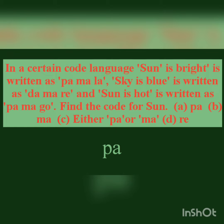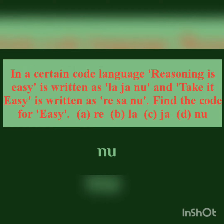In a certain code language, 'sun' appears in both 'sun is bright' (P-A-M-A-L-A) and 'sun is hot' (P-A-M-A-G-O). The common code is P-A-M-A, so 'sun' is coded as P-A-M-A. Next example: 'reasoning is easy' is written as L-A-J-A-N-U and 'take it easy' is written as R-E-S-A-N-U. Find the code for 'easy'.